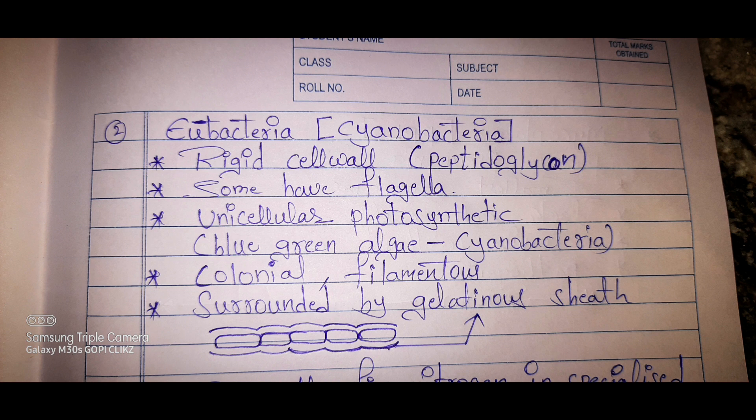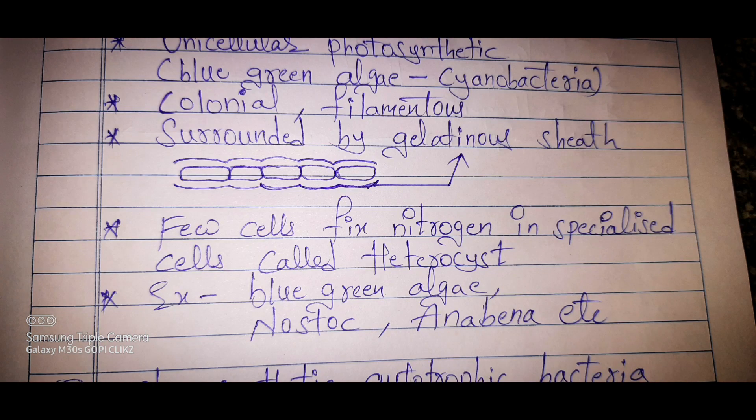Another characteristic is that eubacteria are surrounded by a gelatinous sheath — one extra layer covering the body. Few cells fix nitrogen in specialized cells called heterocysts. Examples include blue-green algae, Anabaena, etc.